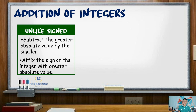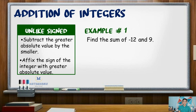As an example, find the sum of negative 12 and positive 9. We subtract the higher absolute value by the smaller value: absolute value of negative 12 is positive 12 minus 9, giving us a difference of 3.